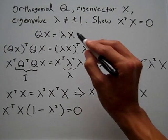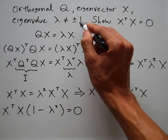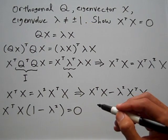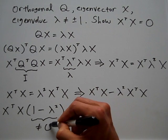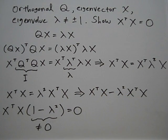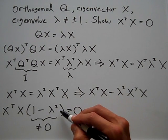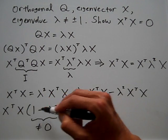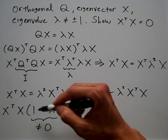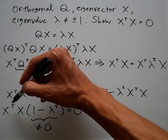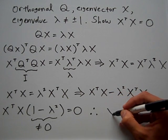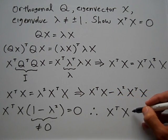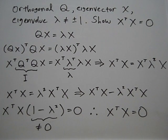As I stated at the beginning, lambda is not equal to either positive or negative 1, meaning that certainly (1 minus lambda squared) is not going to be equal to 0 because of that stipulation. So if this is not 0, then to multiply this by this and get 0, that implies that X transpose times X must be 0. Therefore, X transpose times X must be 0, which is what I was trying to show here, and so that is the end of the proof.